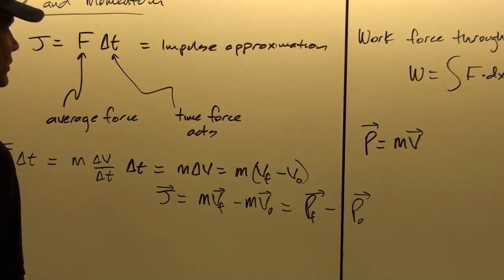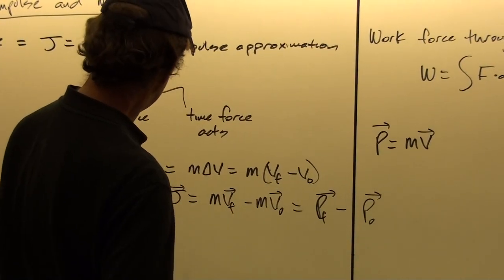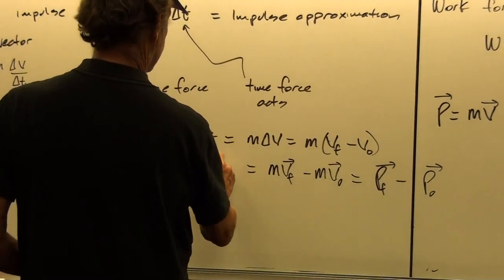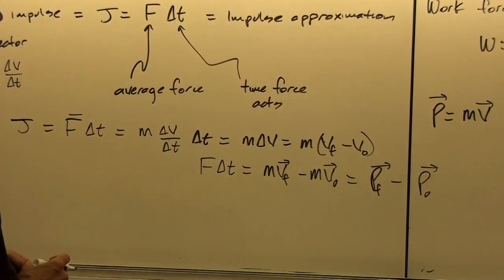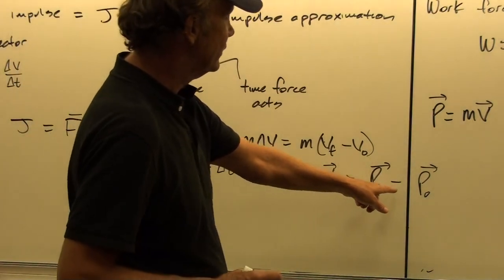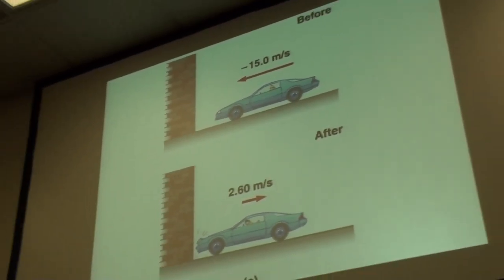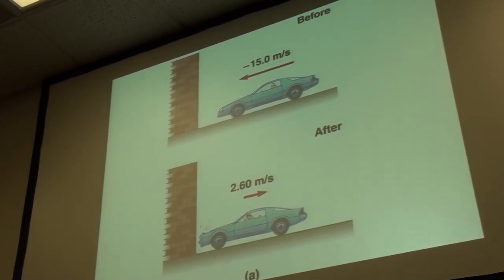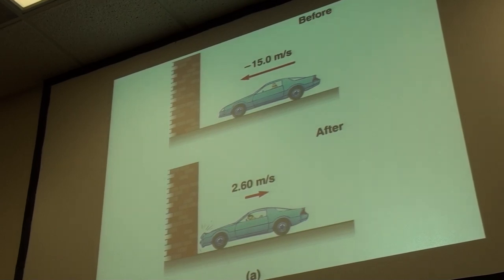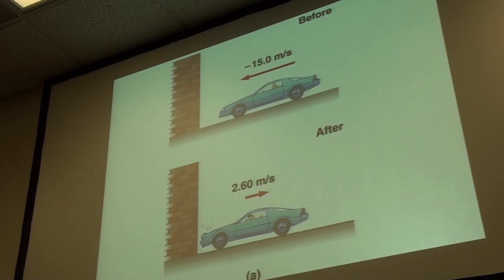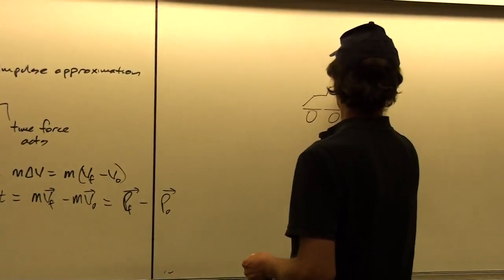This is a way to connect the force function and the time over which the force acts to the change in momentum. So F delta t in our impulse approximation equals the change in momentum. Let's look at a problem where a car is moving to the left at minus 15 meters per second — minus here just means we define leftward as negative — and it bounces off a brick wall and comes back with a final velocity of 2.6 meters per second. Let's find the average force of the wall on the car.